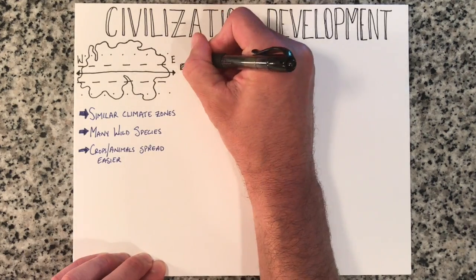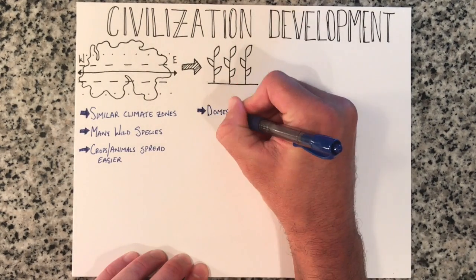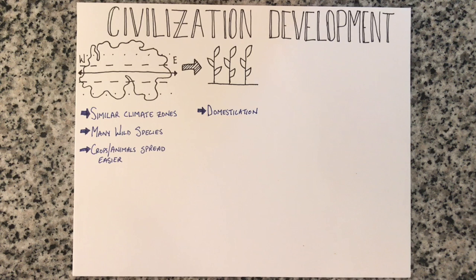The next factor is that of domestication of plants and animals. Because there are more suitable wild species in the areas of a continent on an east-west axis, this allows for a larger pool to choose from when deciding what plants and animals to domesticate. When the climate is similar, the plants that grow in a particular area can now spread easier to one area and then start to domesticate them.